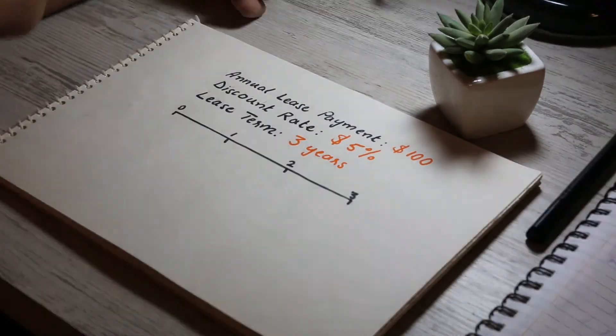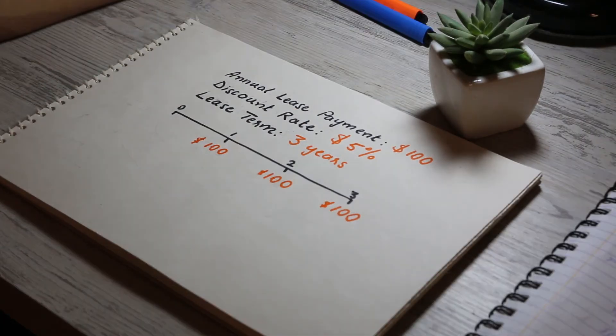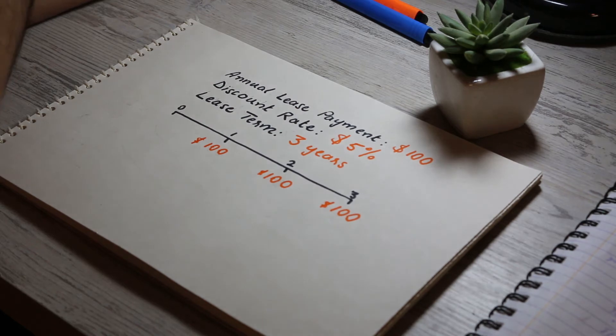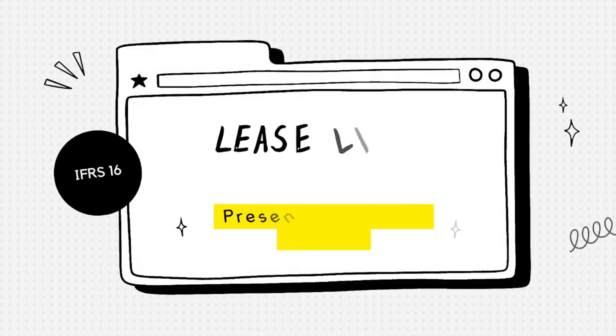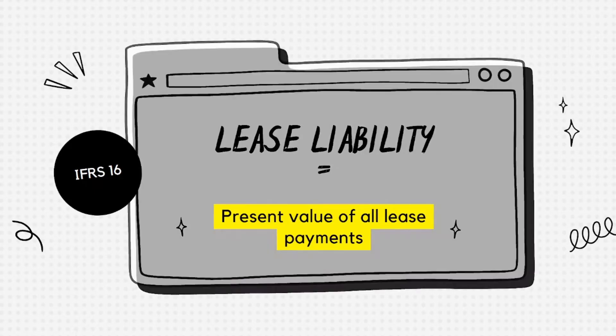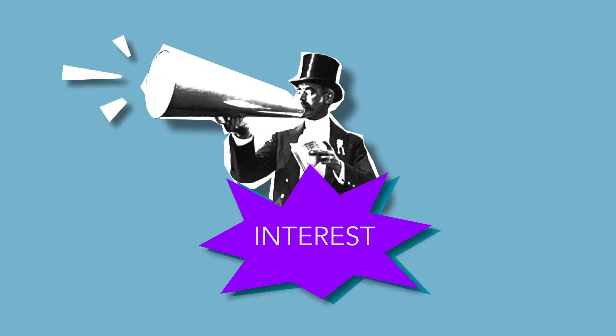Now let's zoom into the lease liability component. This commitment to make a $100 payment at the end of each year is an obligation with a predetermined timing and amount, which makes it hardly any different from a loan. According to IFRS 16, we recognize the present value of all the lease payments as the lease liability. Why would we not recognize the full $300? Because it spans more than one year and there is a financing component involved, which has to be discounted to arrive at the liability amount.